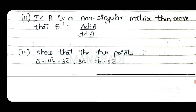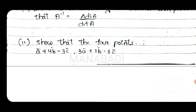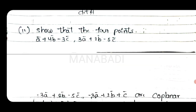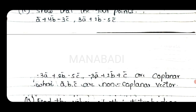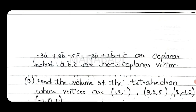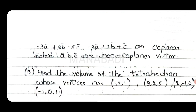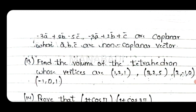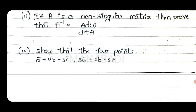Twelfth question: Show that the four points — A vector plus 4B minus 3C, 3A vector plus 2B vector minus 5C vector, minus 3A plus 8B minus 5C, and minus 3A plus 2B plus C — are coplanar, where A, B, C are non-coplanar vectors.